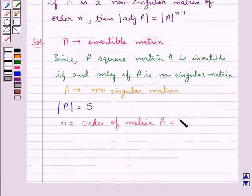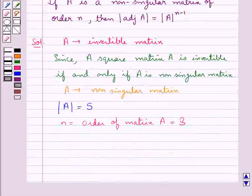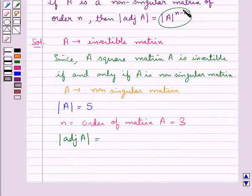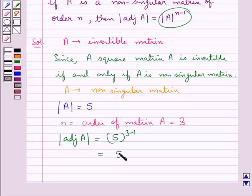So n = 3, then |adj A| = |A|^(n-1) = 5^(3-1) = 5^2 = 25.